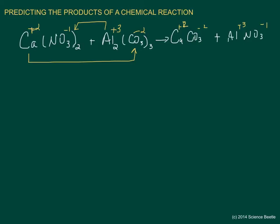Here I'll employ the crisscross method — I take the three and bring it over to the nitrate side, and the one comes down to the aluminum side. Since we don't write a subscript of one, we leave that as is. Rewriting this cleanly, all our products are now neutral, so the next step is to balance this reaction.